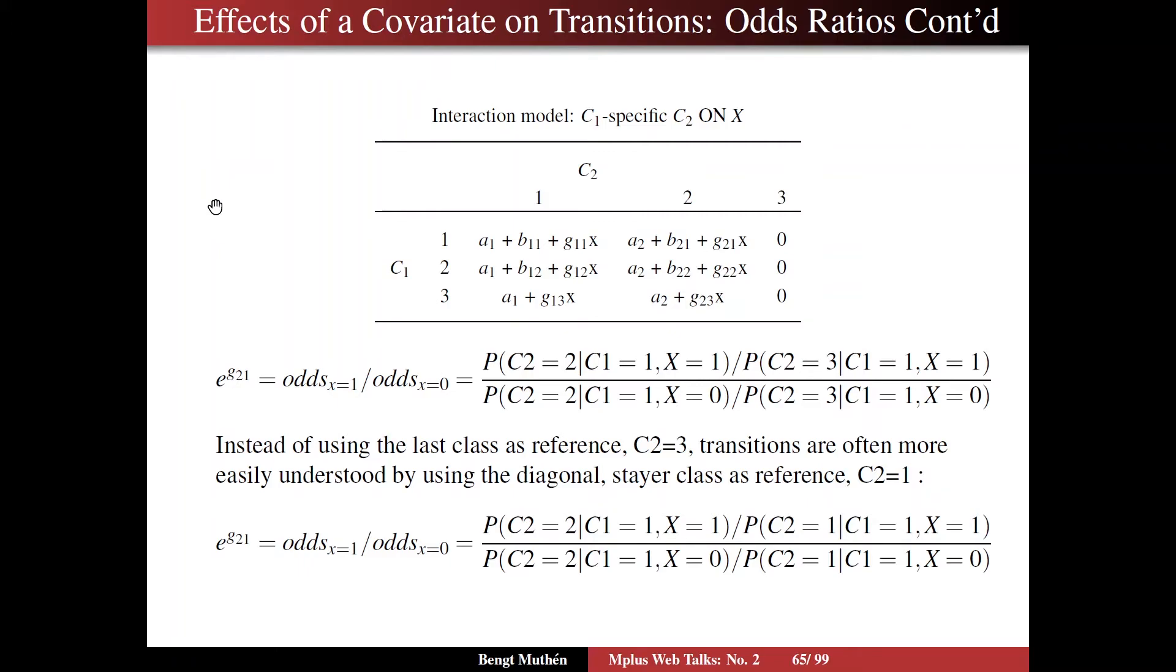So once again, we have this expression, and this is just repeating what I said on the previous page, C2 equals 2, C2 equals 3, for X equals 1, same thing for X equals 0. That's the odds ratio. But instead of using the last class as reference, C2 equals 3, that is, transitions are often more easily understood by using the diagonal, that is, the stay class as a reference, which for the first row would be C2 equals 1. And the diagonal here is what we're going to consider.